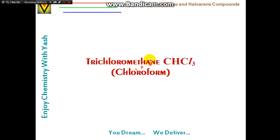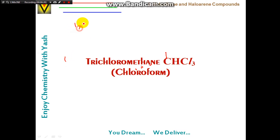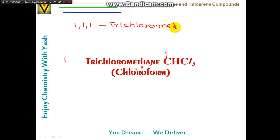Trichloromethane, CHCl₃, is commonly known as chloroform. Its IUPAC name is 1,1,1-trichloromethane.